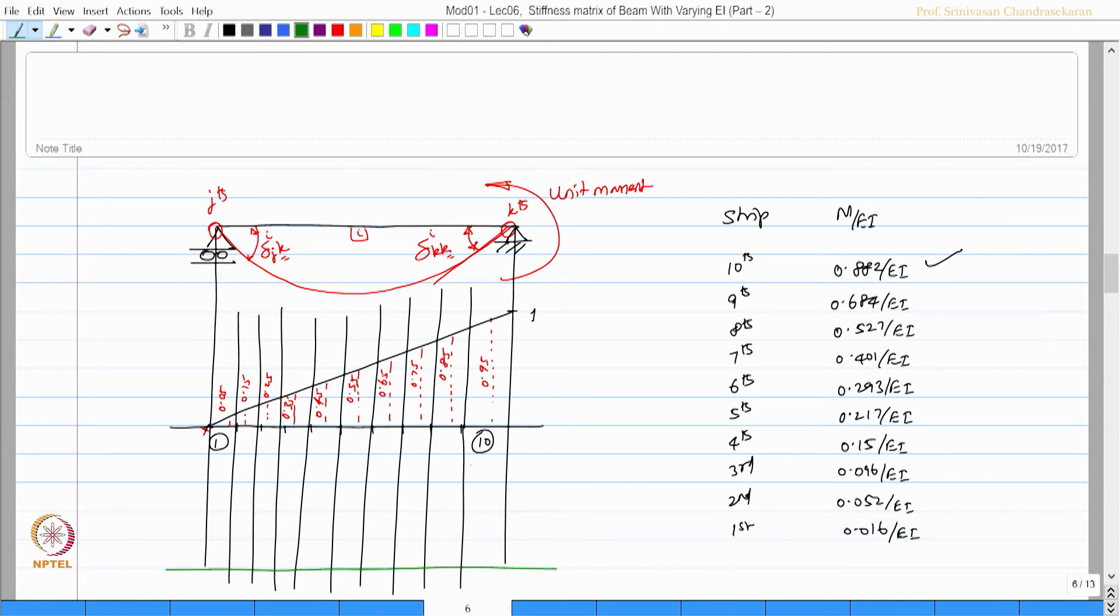So this will have 0.882, then this will have 0.684, then 0.527, then 0.401, then 293, 217, 15, 016, 052, and 016. This is 096 by EI. This is my M by EI diagram as the loading diagram for this beam.